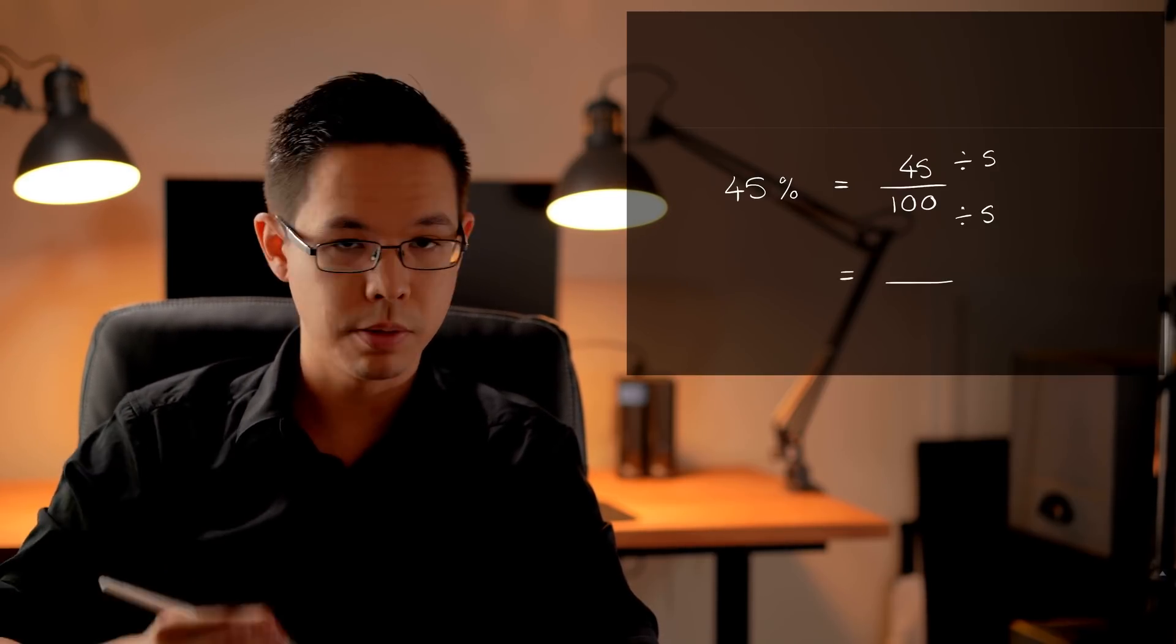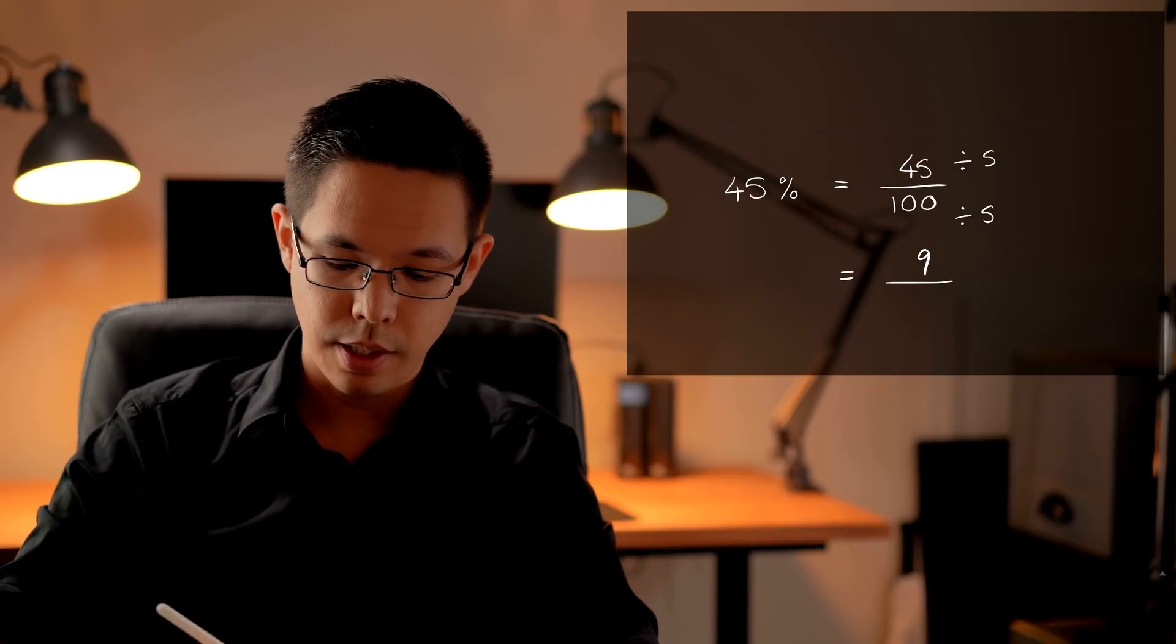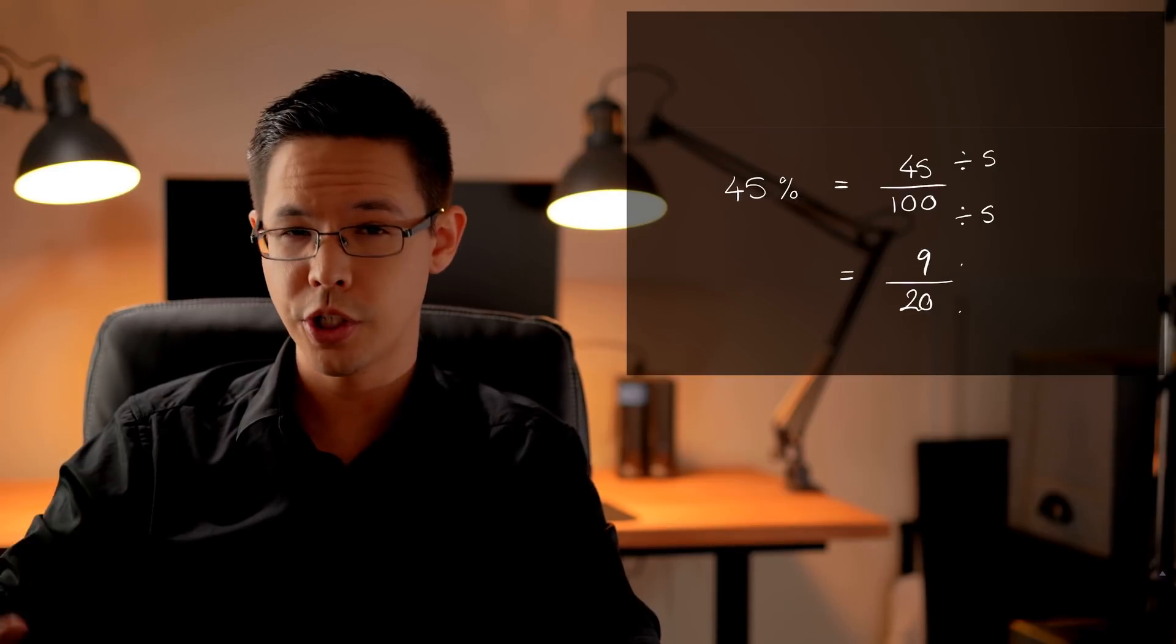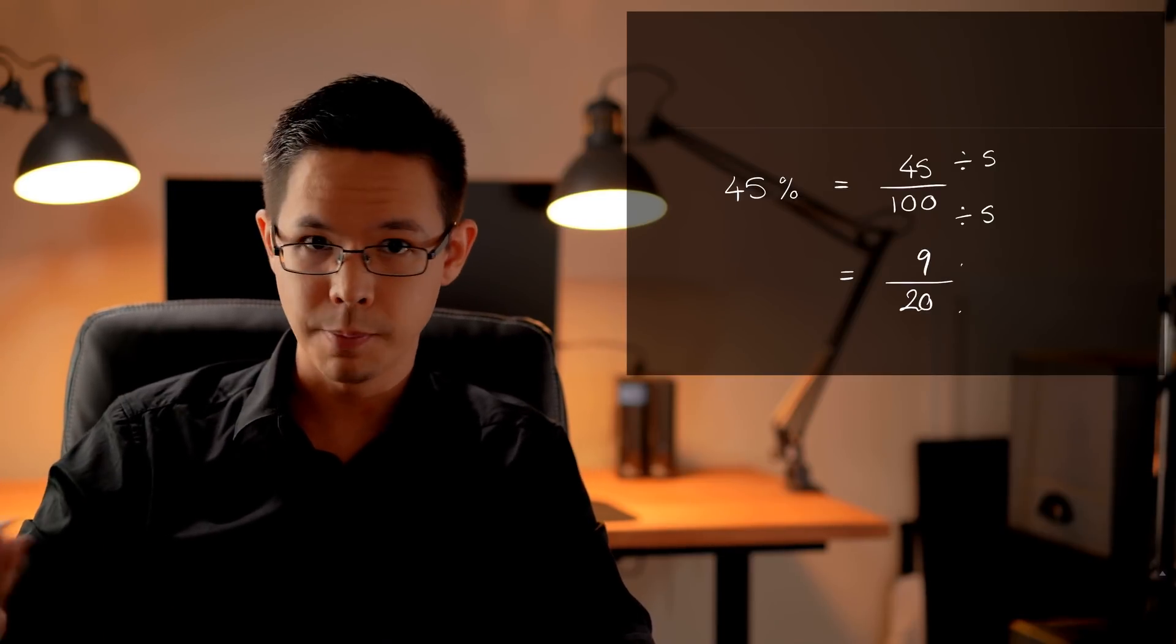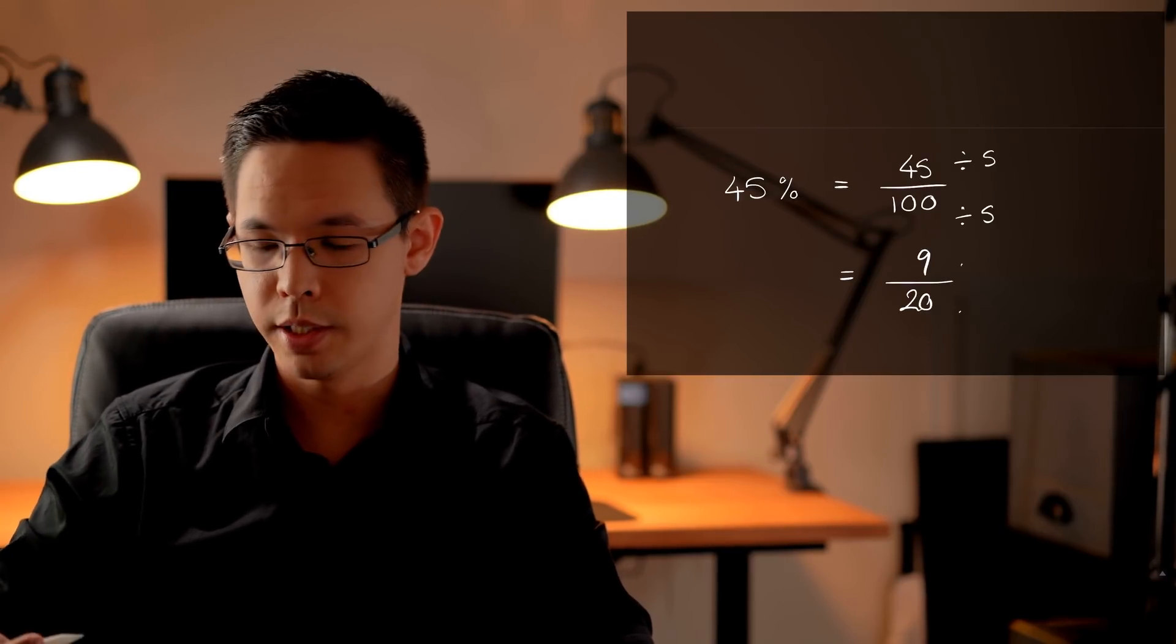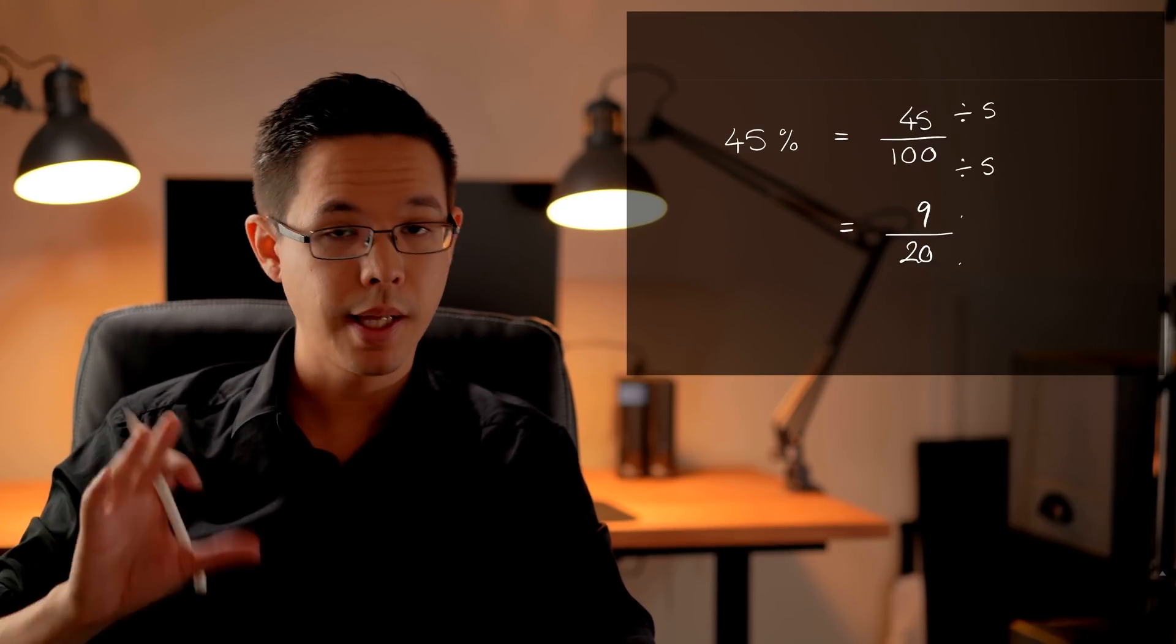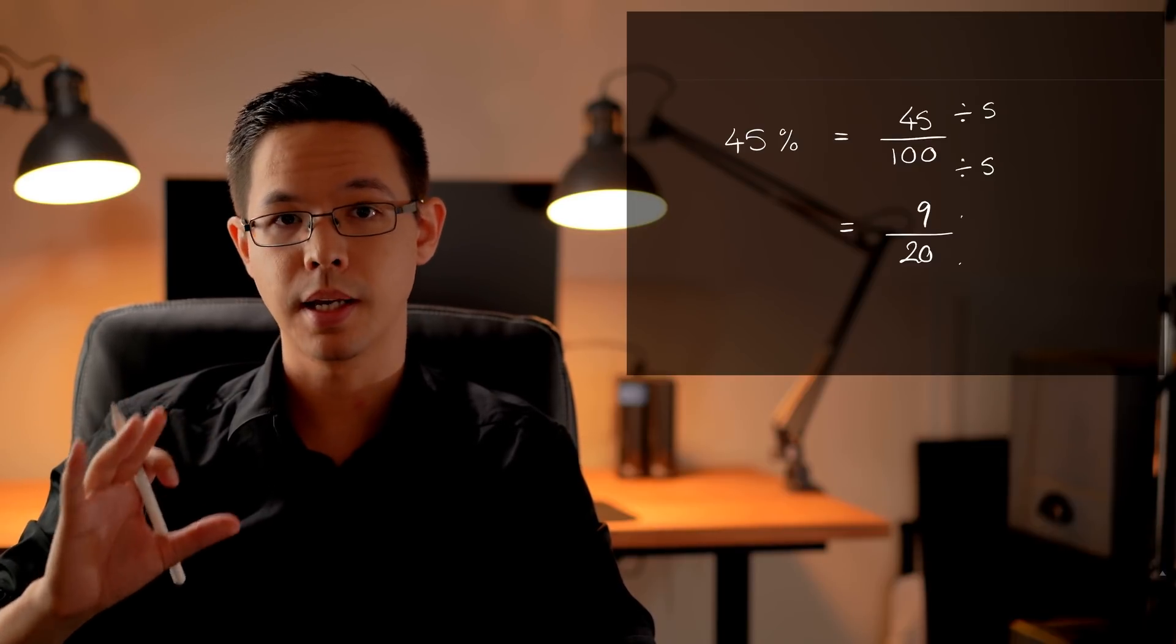So I'm looking at the numerator and the denominator and they both end with a 5 and a 0. That gives me a clue that they can both be divisible by 5. So divide the top and divide the bottom by 5. 45 divided by 5 is 9. 100 divided by 5 is 20. 9 and 20 don't share any other factors in common. So 9 has 1, 3 and 9 as its factors and 20 has none of those besides 1. So that is as simplified as it can be. And here I would call it done.